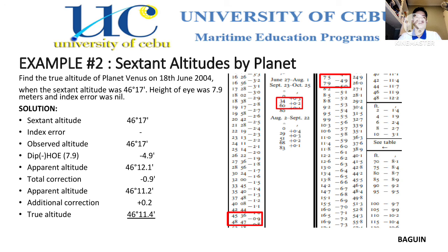Next is our additional correction. Since our apparent altitude is 46 degrees, we fall between the 34 to 60 range, so we add 0.2. Applying that: 46 degrees 11.2 minutes plus 0.2 minutes gives us a true altitude of 46 degrees 11.4 minutes.